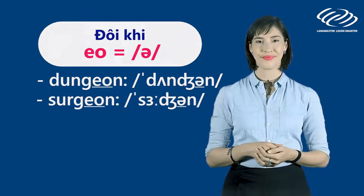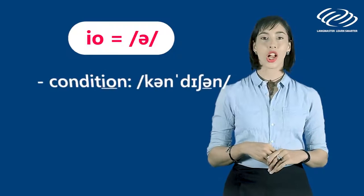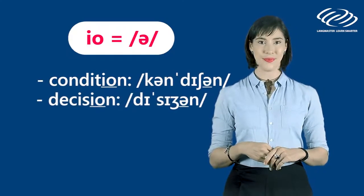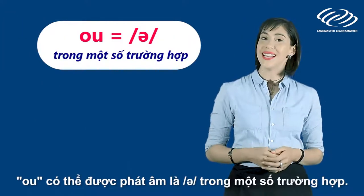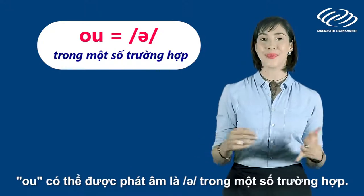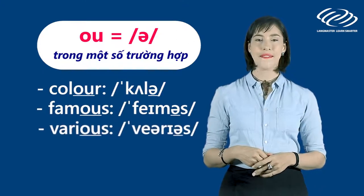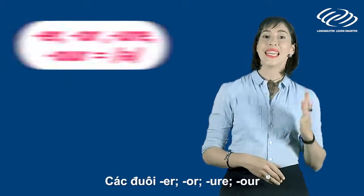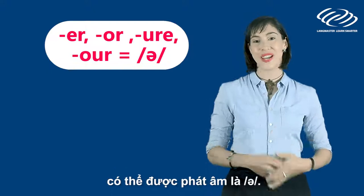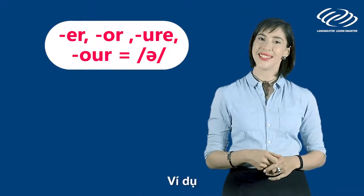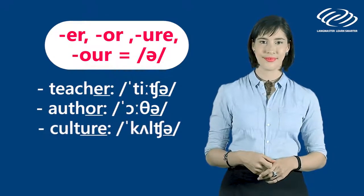I-O can also be pronounced as 'uh' — for example: condition, decision, question. And O-U can be pronounced as 'uh' in some cases, such as: color, famous, various. The E-R, O-R, U-R-E, and O-U-R endings can also be pronounced as 'uh', such as: teacher, author, culture, labor.